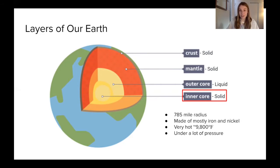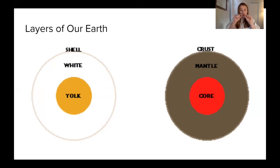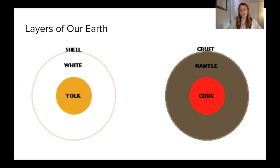As we think about the layers of our earth, it can be hard to wrap our heads around how thick these layers really are. I want to compare them to something more familiar — have any of you had a hard boiled egg? If you think about the thickness of the different layers of a hard boiled egg in relation to the layers of the earth, they're pretty comparable. The shell, which is really thin and brittle and can break up easily, is like the crust. The white inside is like the mantle, and that yolk is like the core.